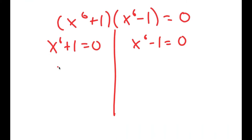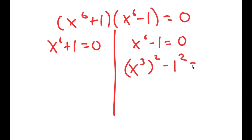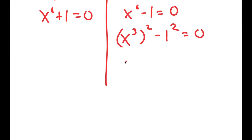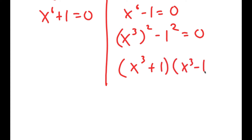Now I'm going to do the same thing again. I'm going to rewrite x to the power of 6 minus 1 equals 0 as x to the power of 3, squared, minus 1 squared, equals 0. So I can use this property again and get x to the power of 3 plus 1 times x to the power of 3 minus 1, equals 0.